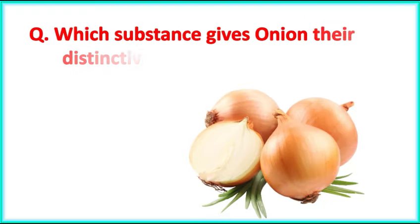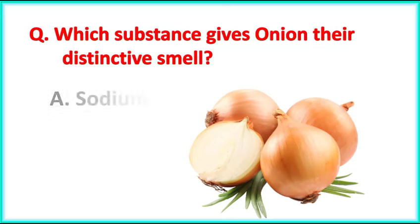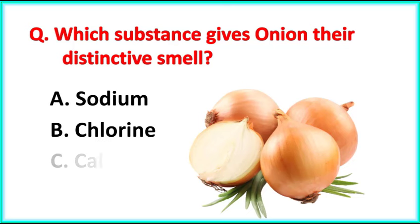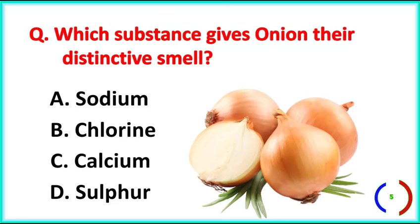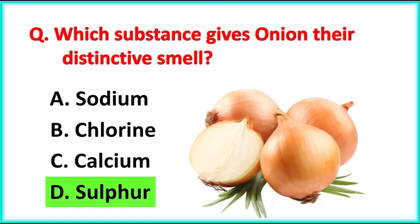Which substance gives onions their distinctive smell? The correct answer is Option D. Sulphur.